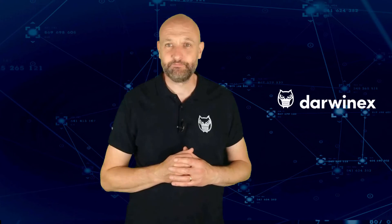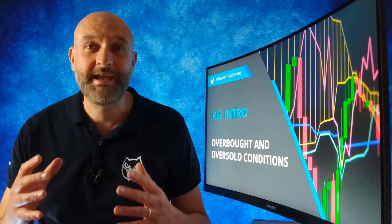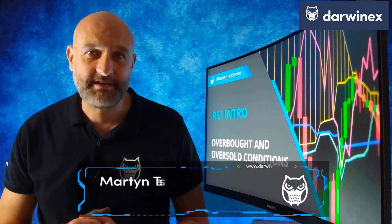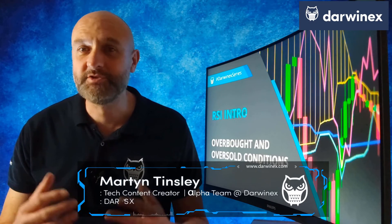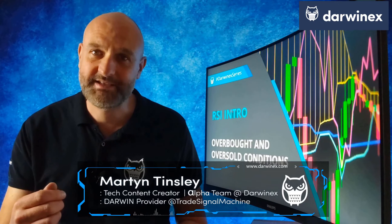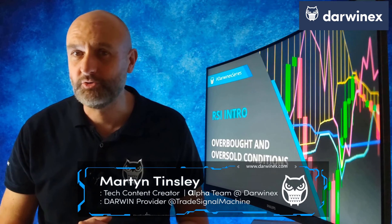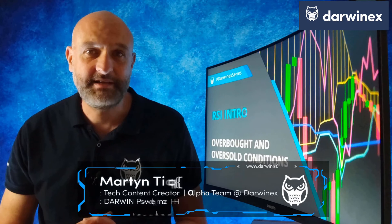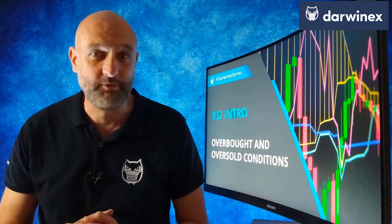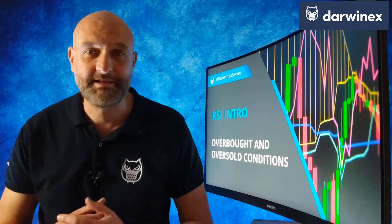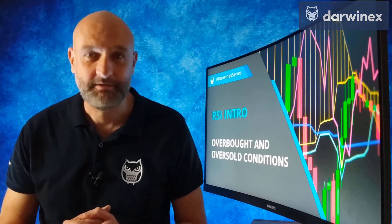Now back to today's tutorial. RSI is what's known as a momentum oscillator. It's a great indicator for helping us understand when the price action of an asset is either overbought or oversold. This can then feed into the evaluation process to help inform trading decisions. Let's get started.